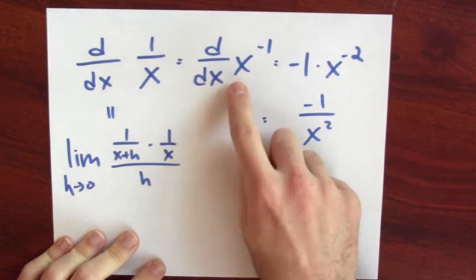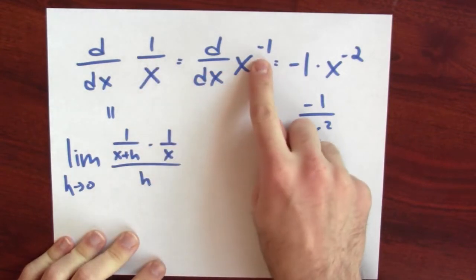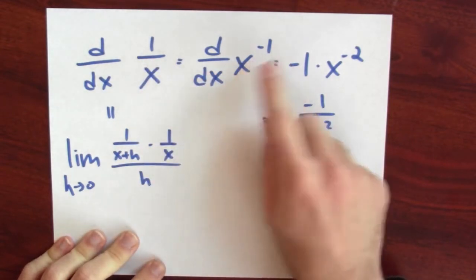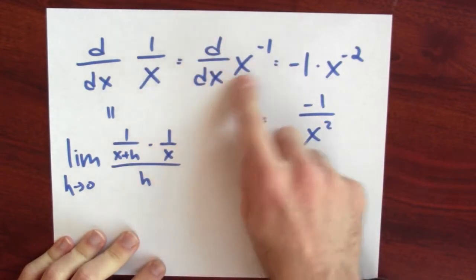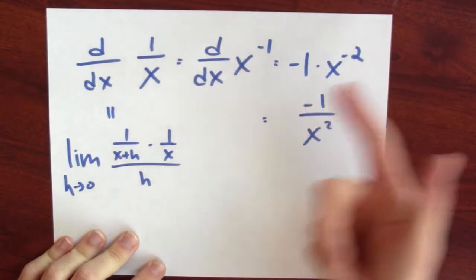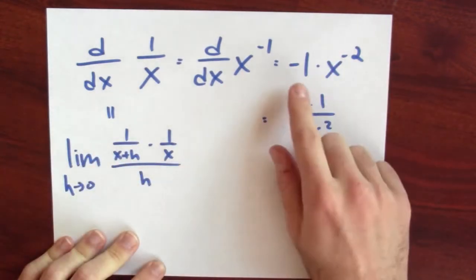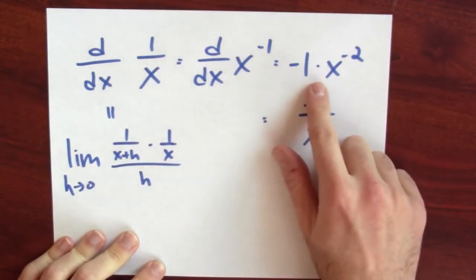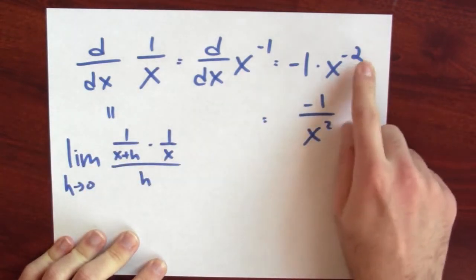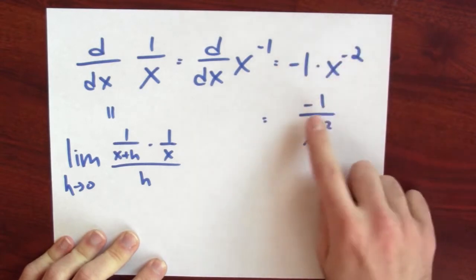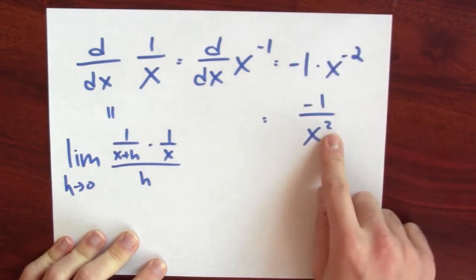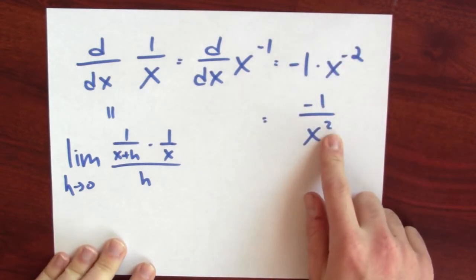Well, 1 over x is just x to the minus first power. If I differentiate this, that's the power rule — we saw how to do that before. That gives minus 1 times x to the minus second power, or another way to write this is minus 1 over x squared.